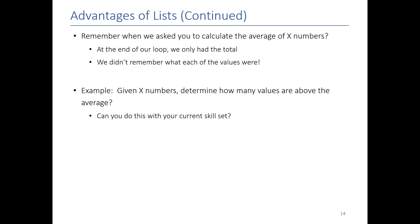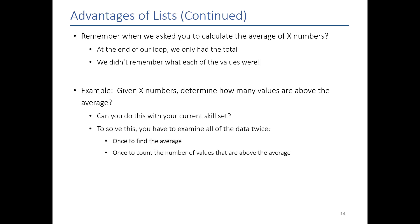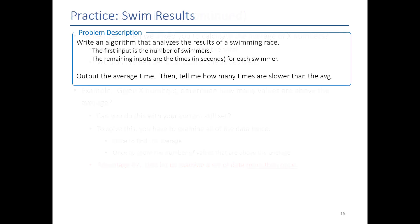That sounds like a small thing, but it actually limits the types of problems you can solve. For example: given a set of numbers, can you determine how many are above the average? You can't do this without a list because it requires looking at your data twice — first to calculate the total and average, and then again to figure out which numbers are actually above it. That's what lists give us — that's our second advantage: lists let us examine a set of data more than once.